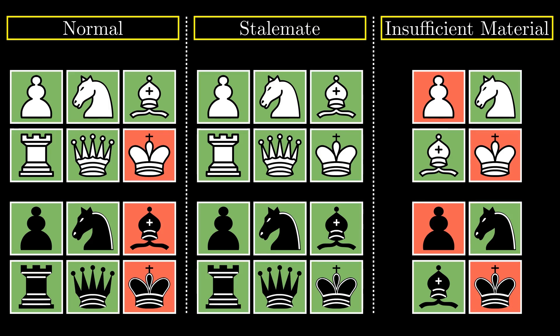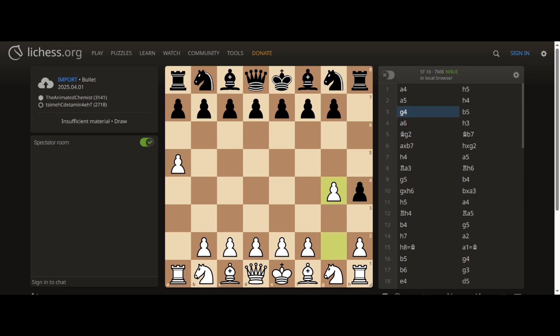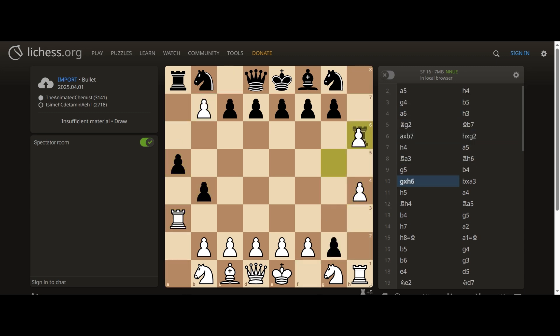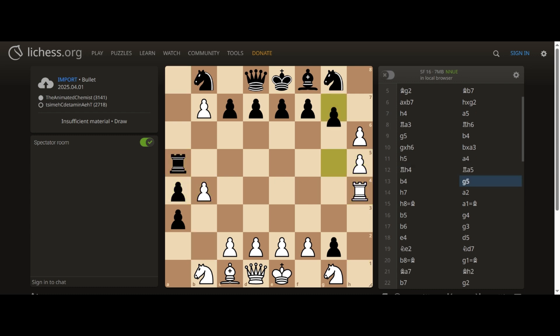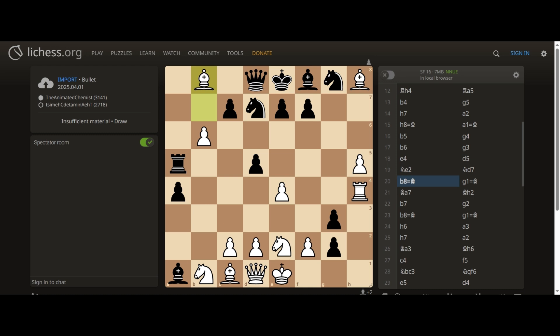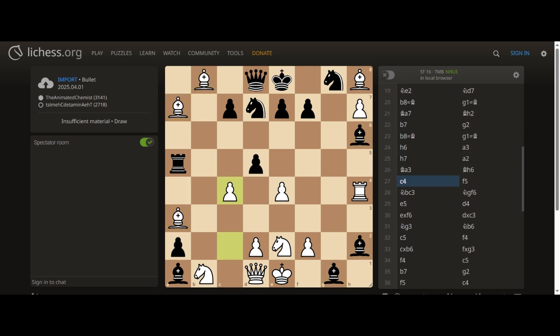But before I go, let me answer the question for the maximum number of pieces that can be on the board when the game is declared a draw due to insufficient material. The answer will be revealed with this 56-move masterpiece. I purposefully left out a condition about King plus Bishop vs King plus Bishop endings, which is they are insufficient as long as the bishops are of the same color.